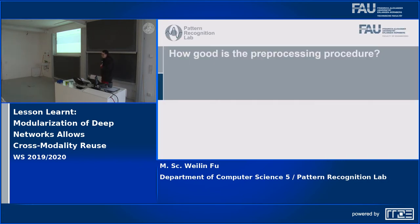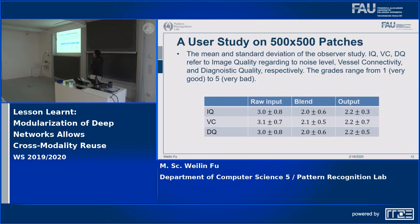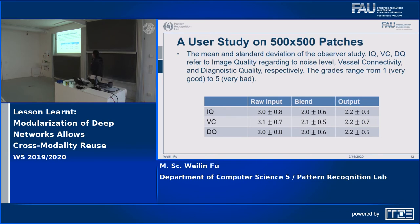The next question is how good is the preprocessing procedure — we don't want it to imagine too much. In the last BVM paper, we did a user study. We invited five OCTA experts and asked them to grade the preprocessed image, the raw input, and the blended image with respect to image quality — like noise level — vessel connectivity, and diagnostic quality. They graded from one (very good) to five (very bad). From the summarized user study, we can see that the experts basically agree that we are getting better image quality after the preprocessing unit.